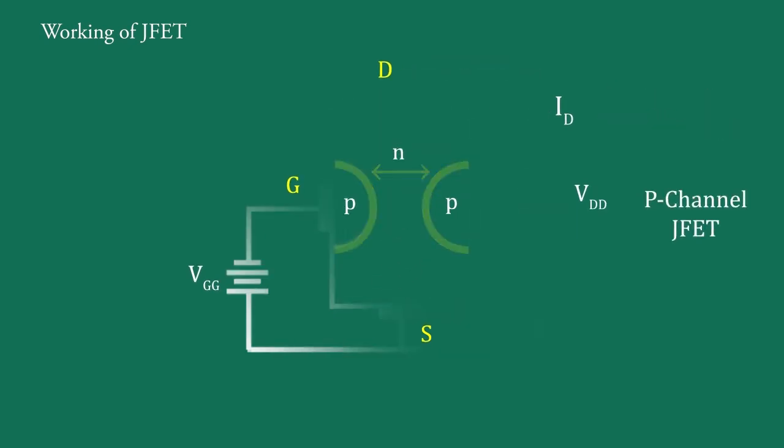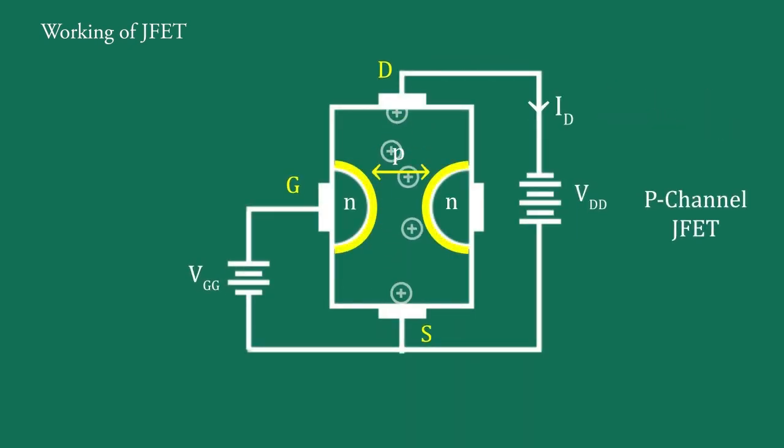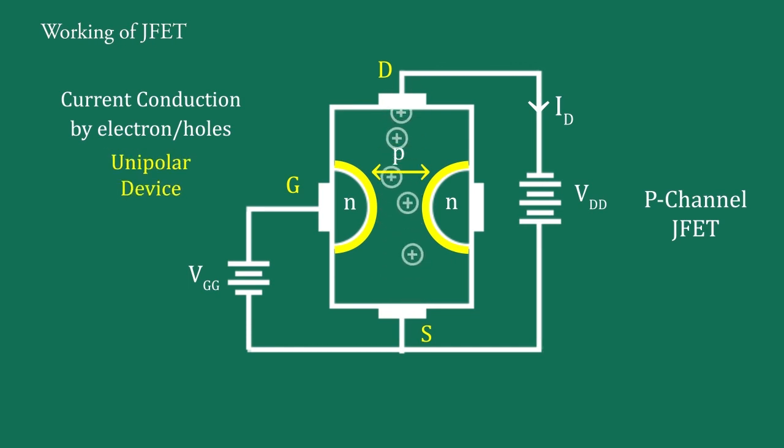While in P channel JFET, the current ID is established by flow of holes only. It means current conduction is either by electron or holes. So, it is also known as unipolar device. A P channel JFET works in the same manner. In this case, current carriers will be the holes instead of electrons and polarities of VGG and VDD are reversed.